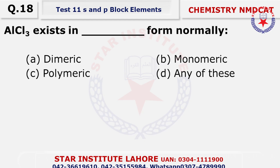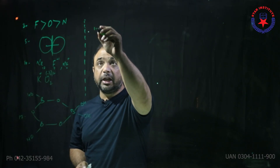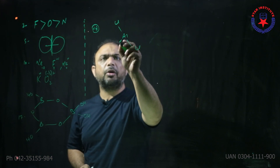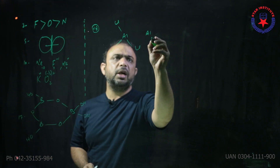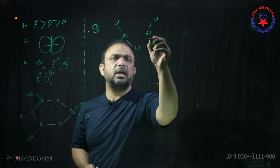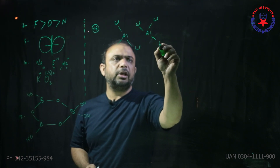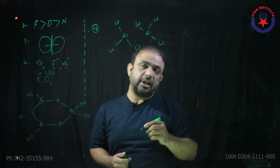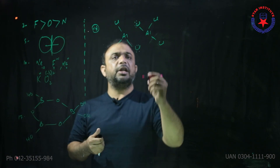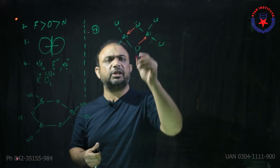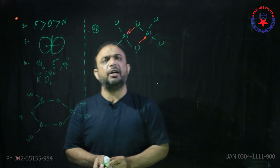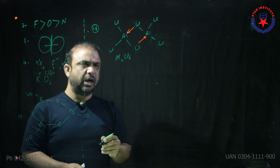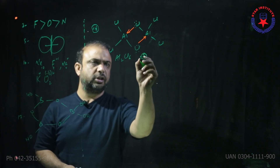Question number 18: AlCl₃ normally exists in a dimer structure. Aluminium's chemistry is called electron-deficient chemistry — its valency is satisfied but its octet remains incomplete. These are called electron-deficient compounds. Chlorine has lone pairs available, so aluminium forms a dative bond. It exists as a cyclic dimer with formula Al₂Cl₆. The total number of dative bonds in Al₂Cl₆ is 2.